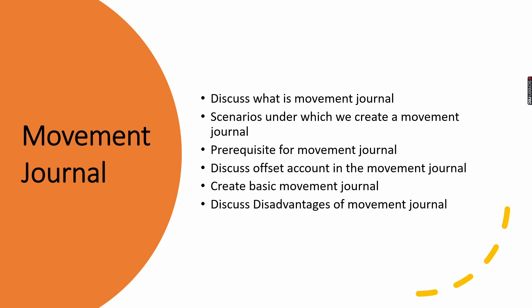We will discuss about the movement journal, inventory adjustment journal, and all journal entries starting from this episode. First we discuss what is the movement journal, then we discuss the offset account used in movement journal lines. After that we complete some prerequisites, create a basic movement journal, and at the end we discuss some disadvantages of the movement journal along with solutions to overcome them.